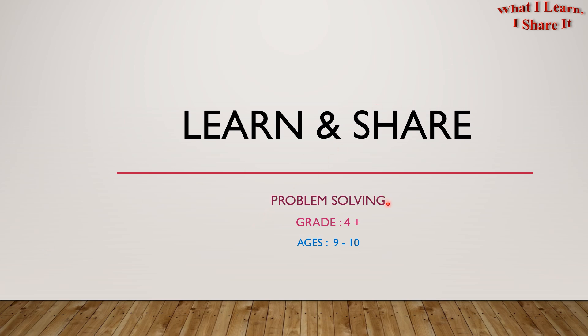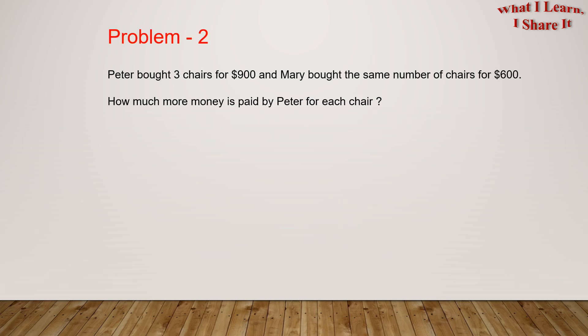We're doing problem solving for ages 9 to 10. Problem 2. Peter bought three chairs for $900 and Mary bought the same number of chairs for $600. How much more money is paid by Peter for each chair?